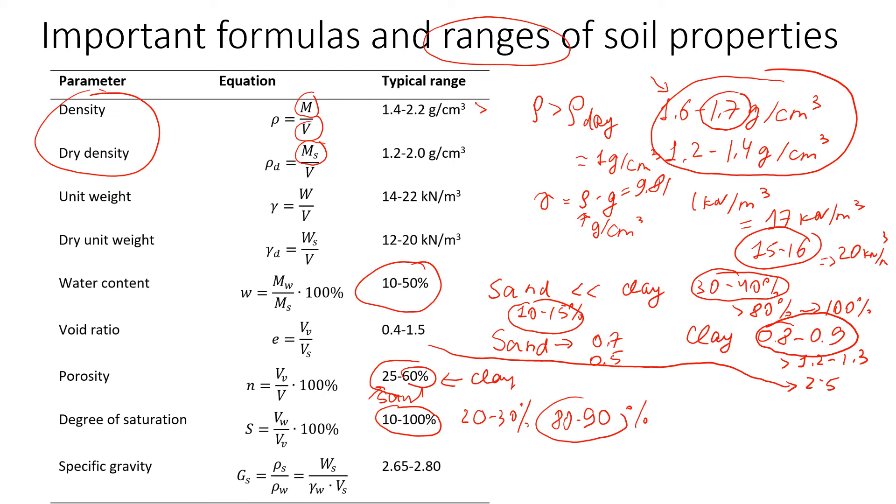The last one is specific gravity. You see that range is pretty narrow, and there's a reason why it's very narrow, because most soil is made of quartz, a mineral. It doesn't matter if it's sand or clay, it's mostly made of quartz. For quartz, specific gravity is about 2.65, which is why specific gravity of soil you deal with will be in this range.